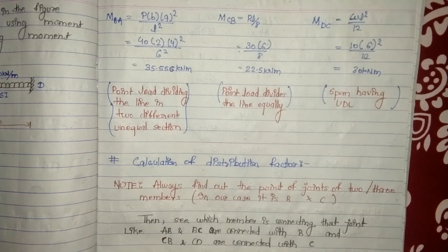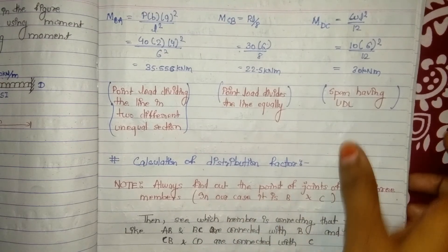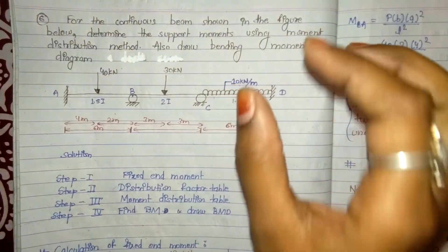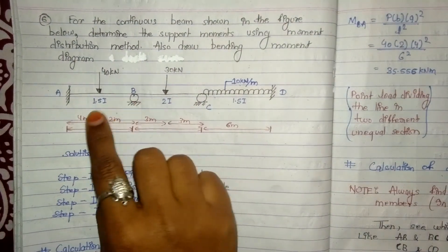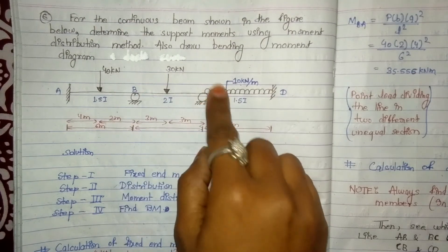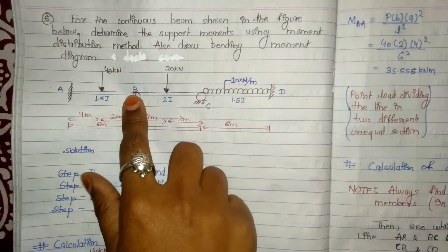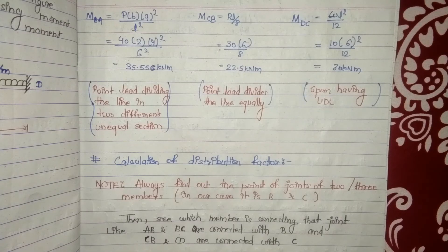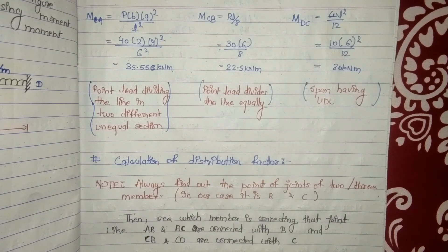Step 2 is the calculation of distribution factor. Always find out the joints where 2 or 3 members meet — in our case it is B and C. In this continuous beam, B connects members AB and BC, so B and C are the joints. Members are AB, BC, CB, and CD. Always identify joints and which members connect to each joint before finding distribution factor.